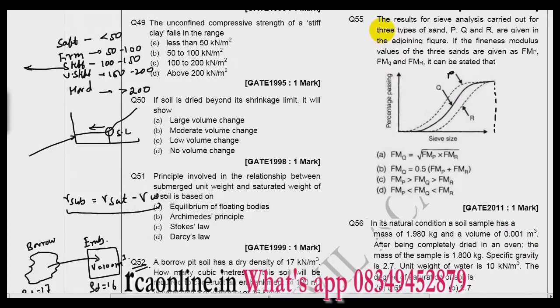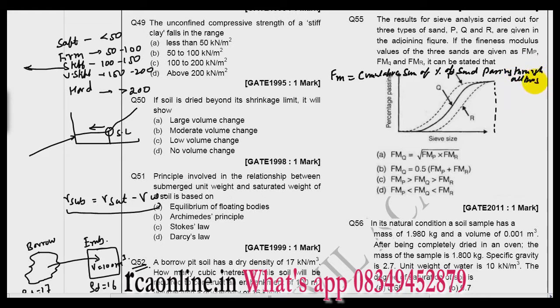So let us see question number 55: The result of sieve analysis carried out by three types of sand P, Q, and R are given in the adjoining figure. If the fineness modulus value of three sands are given as FMp, FMq, and FMr, it can be stated as. So what is fineness modulus? Fineness modulus is cumulative sum of percentage of sand retained passing through all the sieves divided by 100. This is the formula.